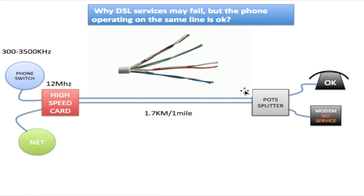This is connected to a POT splitter. The POT splitter separates both your voice and your data, sending the voice to the phone and the data to the modem. The problem we're trying to figure out is why the phone is working but the internet is not working.